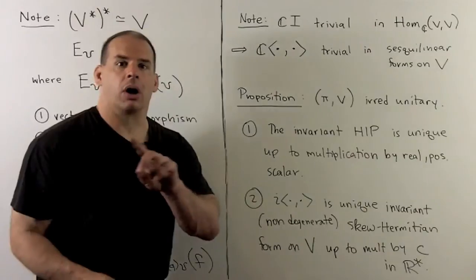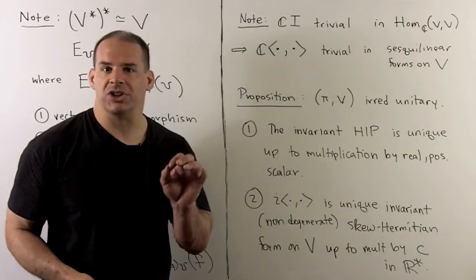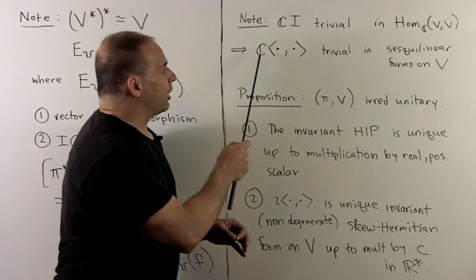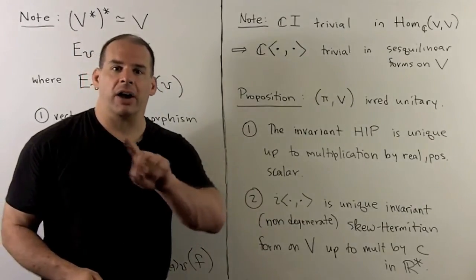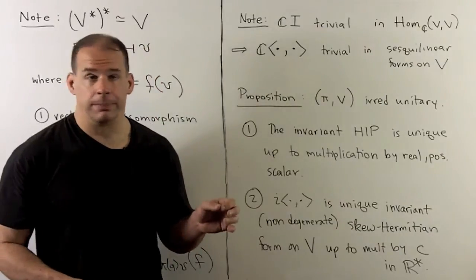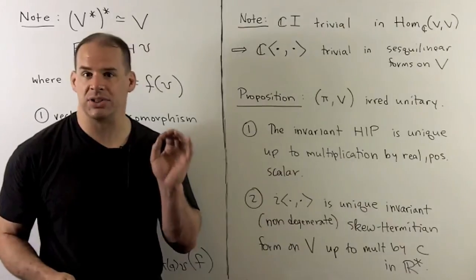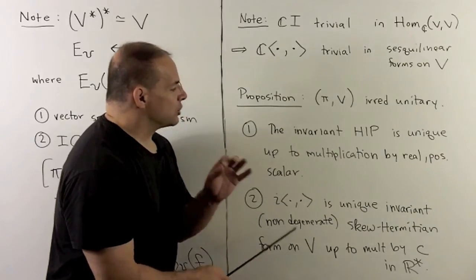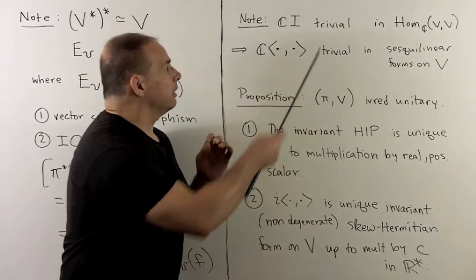Going back to our string of correspondences, recall that C times the identity map was the unique trivial representation in Hom. Following the correspondences out, that says C times our invariant Hermitian inner product is the unique trivial representation in the space of sesquilinear forms on V. So if we're looking for invariant sesquilinear forms, they all arise in this manner. With that, we have the following proposition: for pi V irreducible and unitary, the invariant Hermitian inner product is unique up to multiplication by a real positive scalar. Also, i times our Hermitian inner product is the unique invariant non-degenerate skew-Hermitian form up to multiplication by a non-zero scalar.